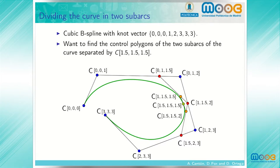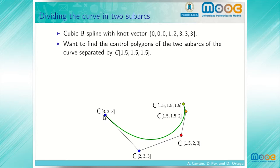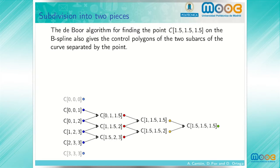For the other segment of the curve, the control polygon for the segment from t equals 1.5 to t equals 3 is given by these three points obtained in the DeVore algorithm and these two control vertices from the original control polygon of the curve. So we see a schematic representation of the DeVore algorithm to find the point on the curve at t equals 1.5.